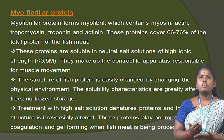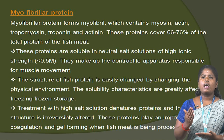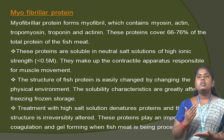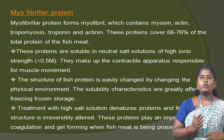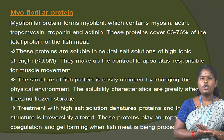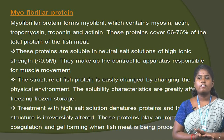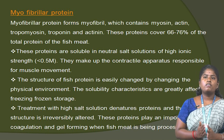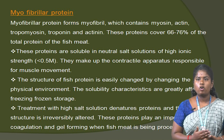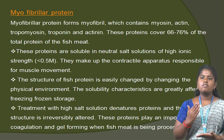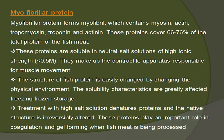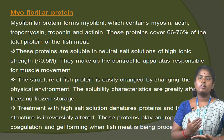Myofibrillar protein forms the myofibril, which contains myosin, actin, tropomyosin, troponin and actin. These proteins cover 66 to 76% of the total protein of fish meat, and are soluble in neutral salt solution of high ionic strength. They make up the contractile apparatus responsible for muscle movement. The structure of fish protein is easily changed by changing the physical environment. The solubility characteristics are greatly affected by freezing and frozen storage. Treatment with high salt solution denatures the protein, irreversibly altering the native structure. These proteins play an important role in coagulation and gel formation when fish meat is being processed.